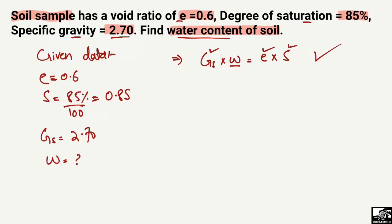If the void ratio or some other values were unknown, we'd need another formula. But here, all are known to us, so we can simply find the water content, which will equal e multiplied by the degree of saturation divided by the specific gravity.